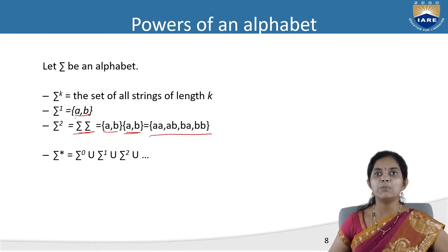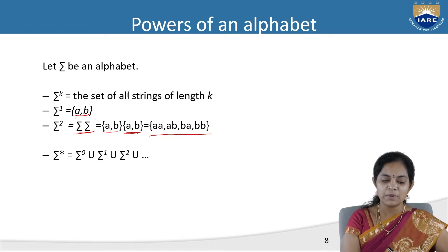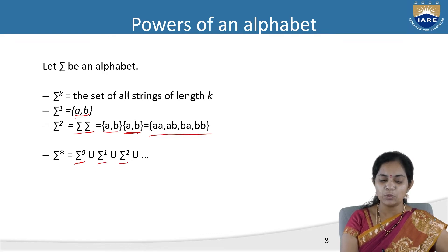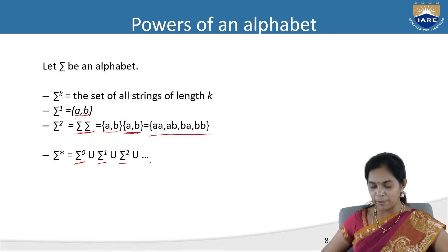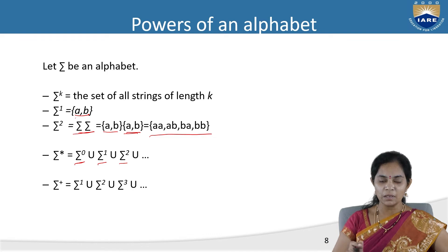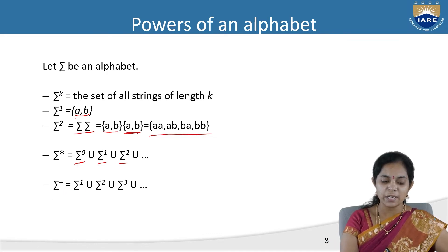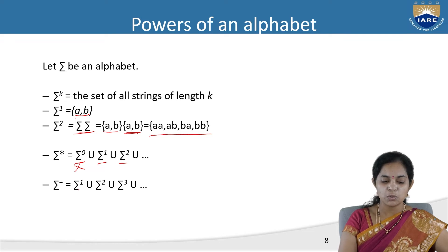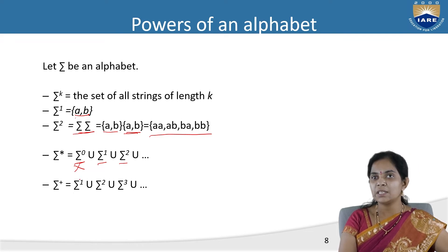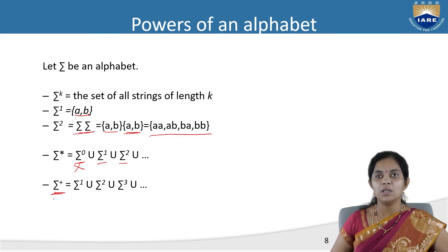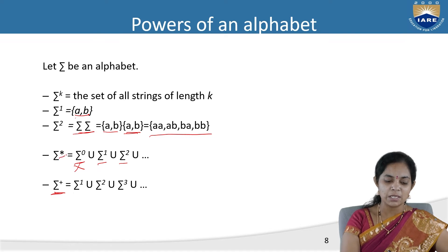Sigma plus (Σ+) does not contain sigma^0 — the empty string. So the main difference between star and plus is that sigma plus does not include the empty string.